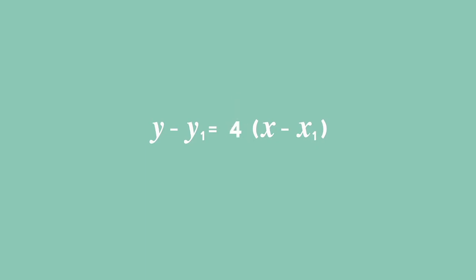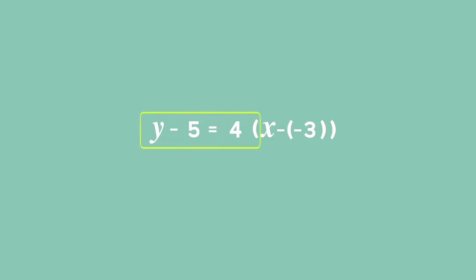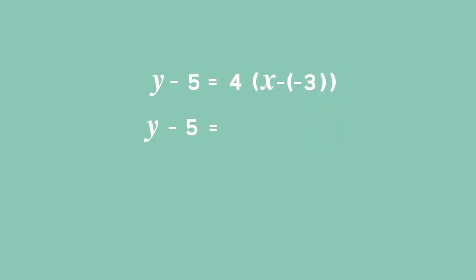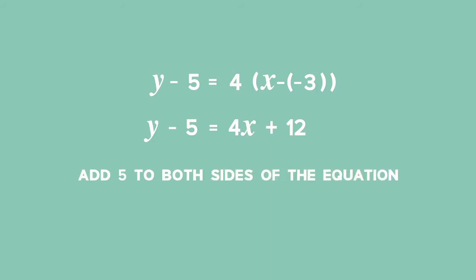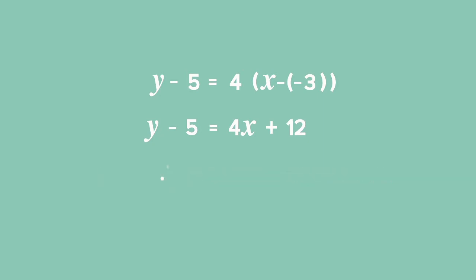Replace m with 4. Substitute y1 with the y-coordinate of point A, which is 5, and substitute x1 with the x-coordinate of point A, which is negative 3. So we get y minus 5 equals 4 times (x plus 3). Removing the brackets: y minus 5 equals 4x plus 12. Adding 5 to both sides gives y equals 4x plus 17.